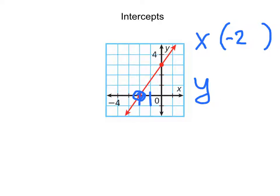The value of y is going to be 0. Because in order to be directly on the x-axis, the value of y can't be positive, which would be above the axis, and it can't be negative, which would make it below the x-axis. So our ordered pair for an x-intercept is always going to have a y-value of 0.